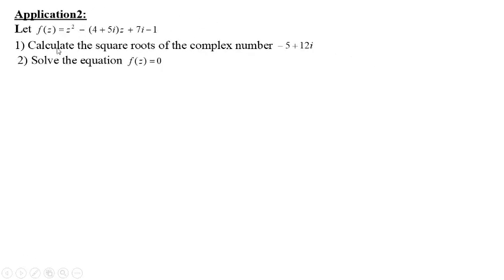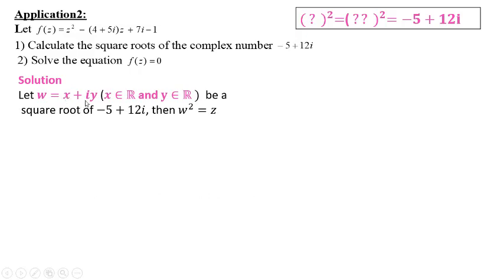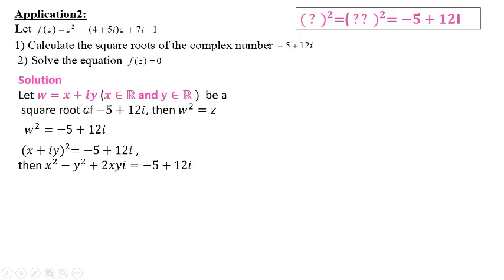Application number 2: let f(z) = z² − (4 + 5i)z + (7i − 1). Part 1: calculate the square roots of the complex number −5 + 12i to solve the equation f(z) = 0. We should find two complex numbers whose squares will be −5 + 12i. Let w = x + iy, where x and y are real numbers, be a square root of −5 + 12i. By definition, w² = z. Make a substitution and do calculations to reach the result.